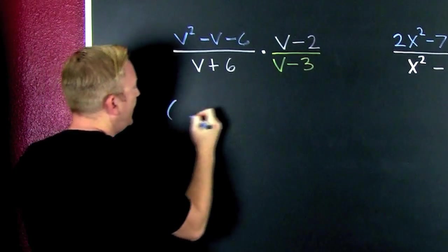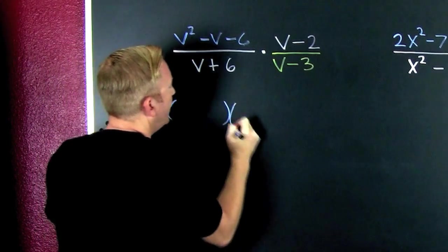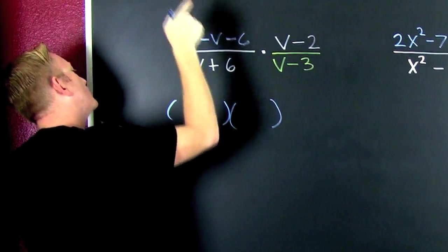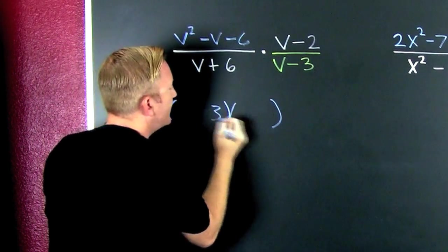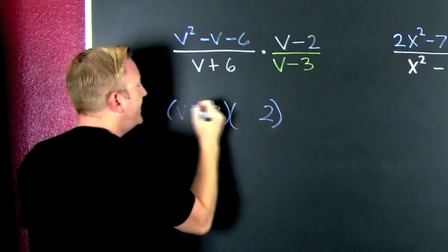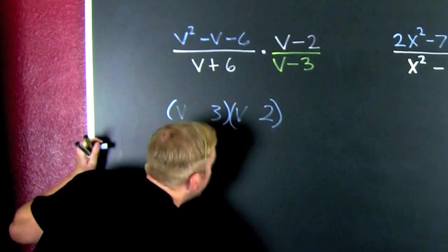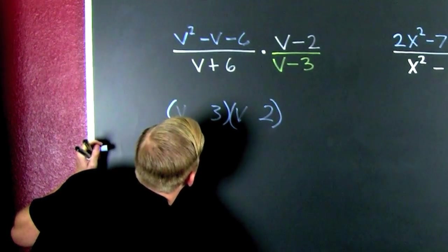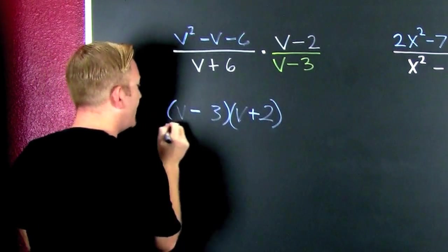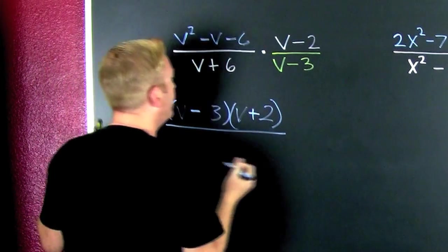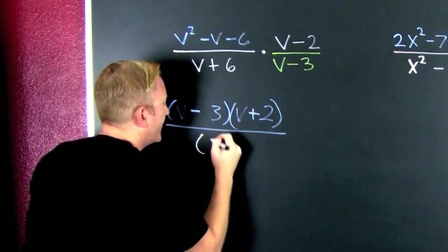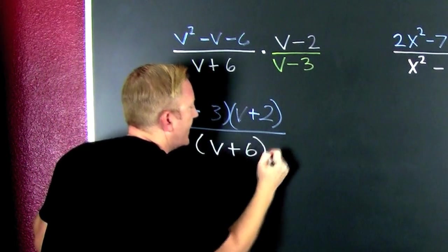First I want to factor. I'm looking at the factors of 6 that subtract to be 1, and that's 3 and 2. And then that's V and V. The signs are different and the big one's negative, positive, and it's still all over that V plus 6.